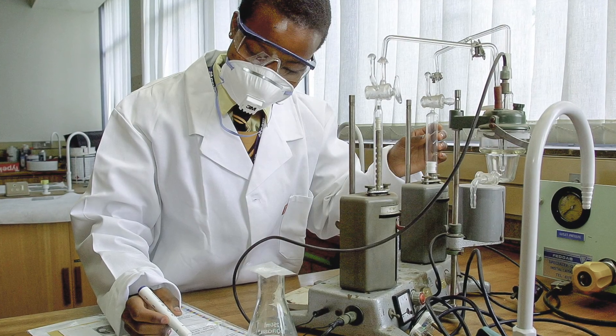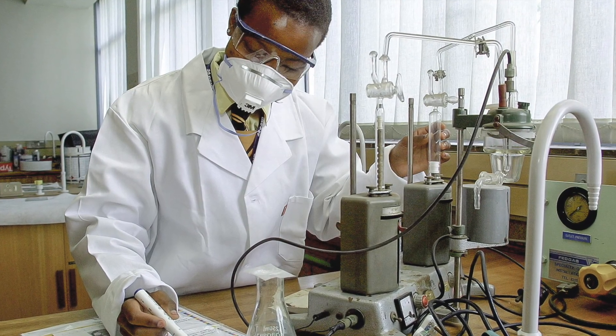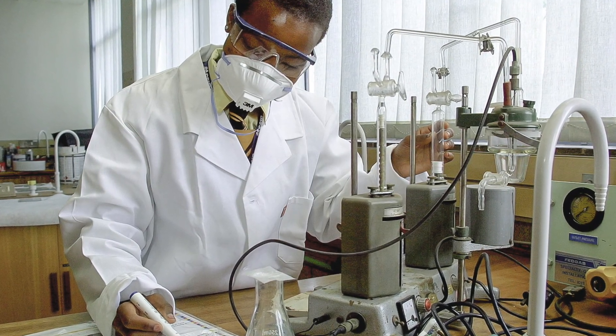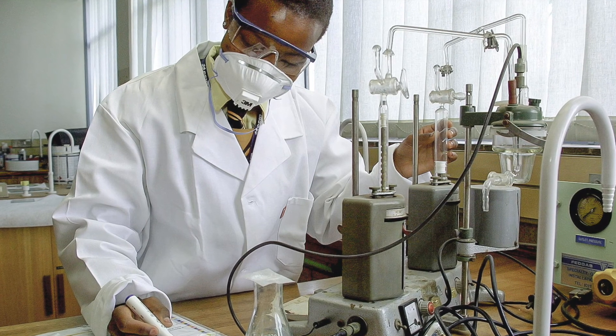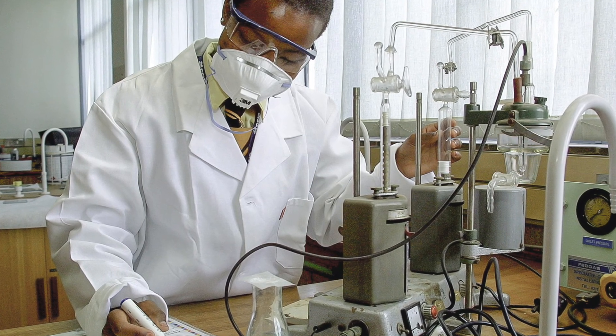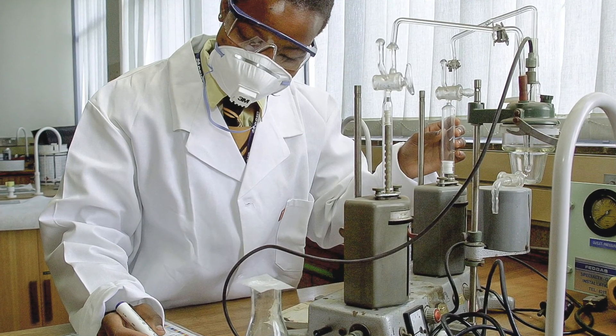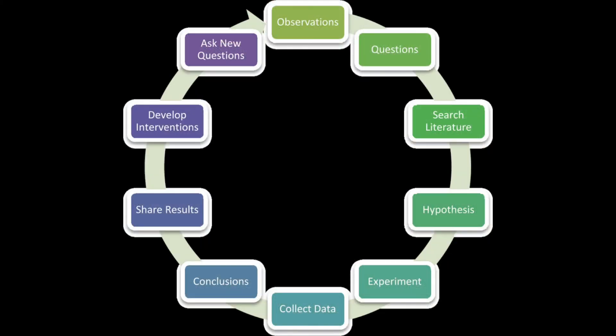Scientific knowledge is the result of scientific processes. It is the information that we get from experiments and testing. Without following the proper scientific processes, scientific knowledge becomes less reliable.